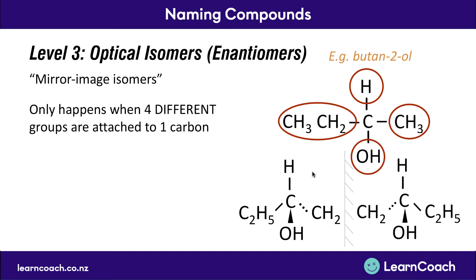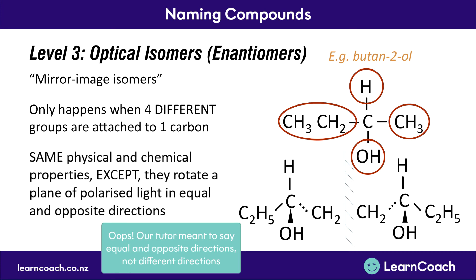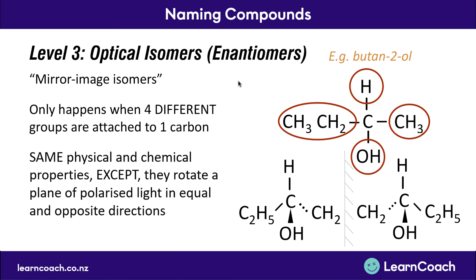A question that comes up all the time is how do you tell the difference between optical isomers? Surprisingly, they have exactly the same physical and chemical properties. However, the difference is that they will rotate a plane of polarized light in different directions. You shine a plane of light through one type of enantiomer and it will rotate clockwise; shine it through the other type and it rotates anticlockwise. So while they have the same physical and chemical properties, you need to say that they rotate a plane of polarized light in opposite or different directions.